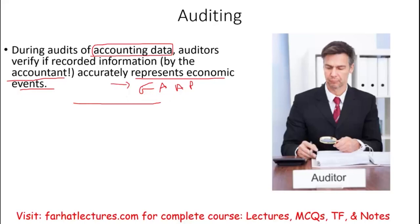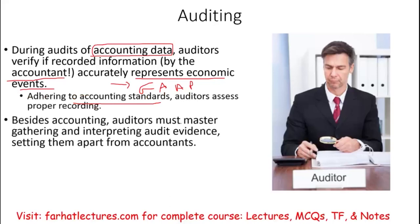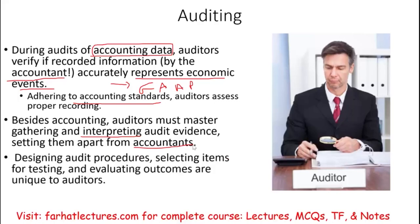Besides accounting knowledge, auditors must also know how to gather and interpret audit evidence, which sets them apart from accountants. Accountants record and report transactions to users; auditors go further by designing audit procedures, selecting items for testing — because in an audit you cannot test everything. You have to decide which areas, transactions, and data to audit and which not to, which is called sampling. Evaluating the outcome of this process is unique to auditing and totally different from accounting.